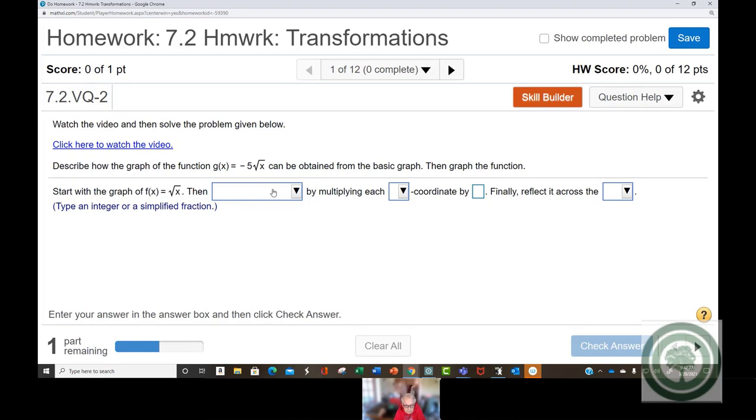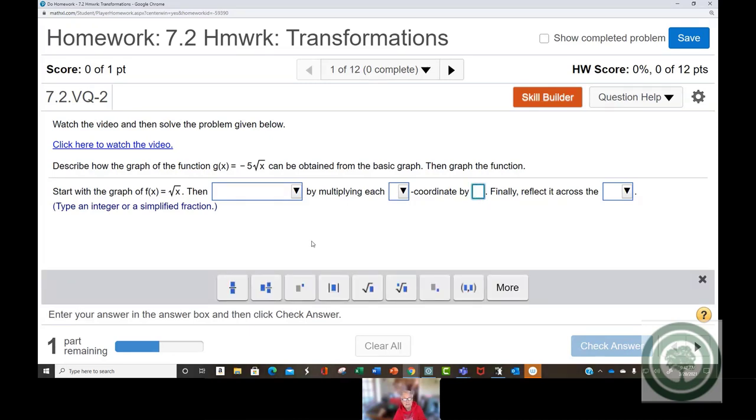Then, by multiplying each coordinate by... Well, that tells you a lot, doesn't it? Okay. Well, let's start and see what our choices are. Okay. Shrinking and stretching vertically and horizontally. By multiplying each x or y coordinate by... Well, it just so happens in this problem that the only multiplying of coordinates is going to be done by the 5. Not by the minus. By the 5.